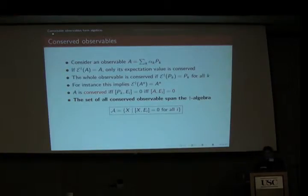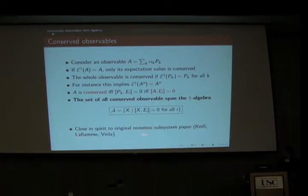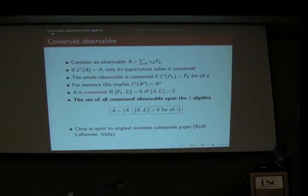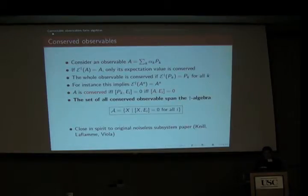The set of all conserved observables spans an algebra of all operators commuting with all Kraus operators. Since they are self-adjoint, the algebra generated is a dagger algebra — closed under Hermitian conjugation. In the picture that Lorenza Viola presented, this algebra would be the commutant of the interaction algebra. This is very close to the idea in the original paper on subsystems by Knill, Laflamme, and Viola, except they didn't have this interpretation in terms of the algebra representing observables.